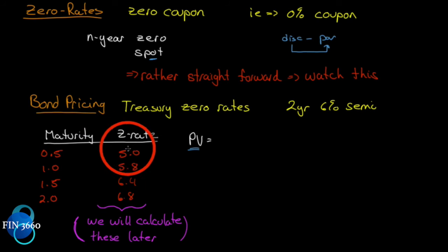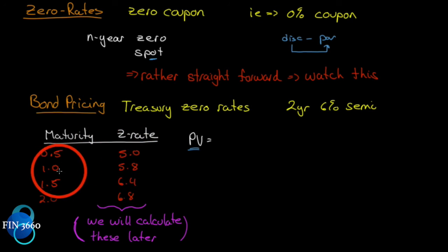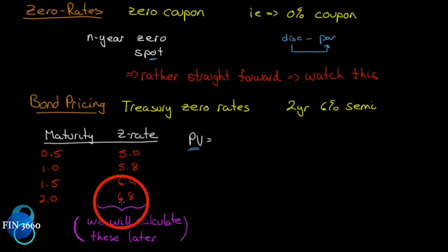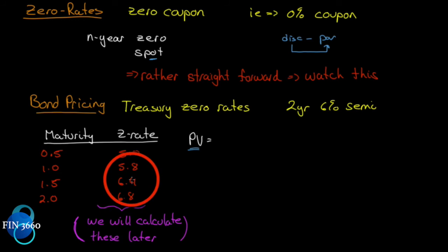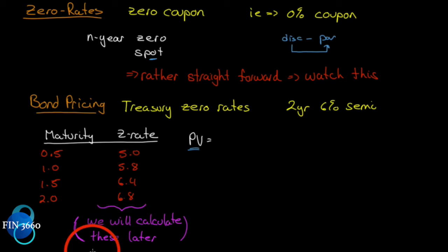Let's say we found some zero rates: a six-month security yielding five percent, a one-year yielding 5.8%, the 1.5-year at 6.4%, and the two-year at 6.8%. I will show you later how to calculate zero rates from coupon bonds — we can find coupon bonds and calculate what the zero rate would be on them.